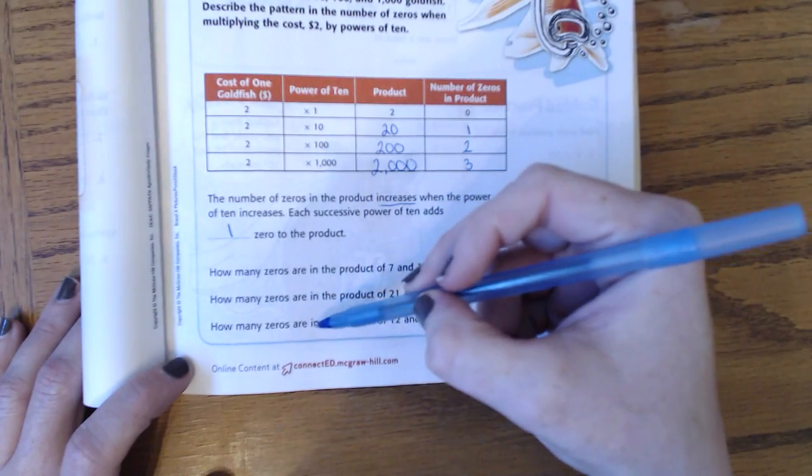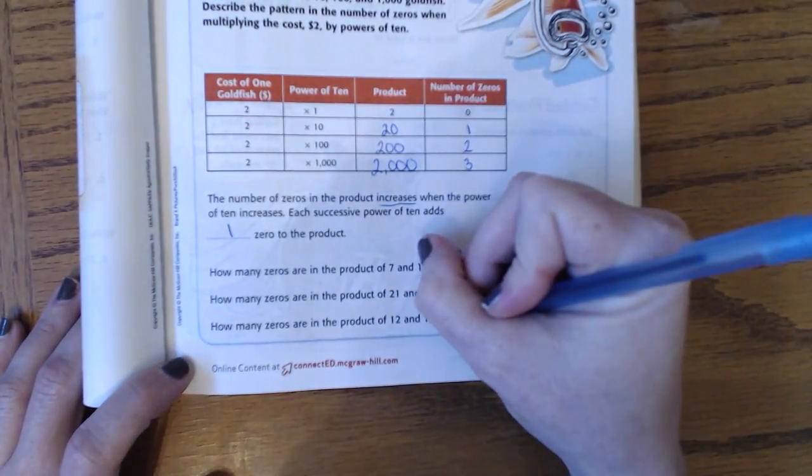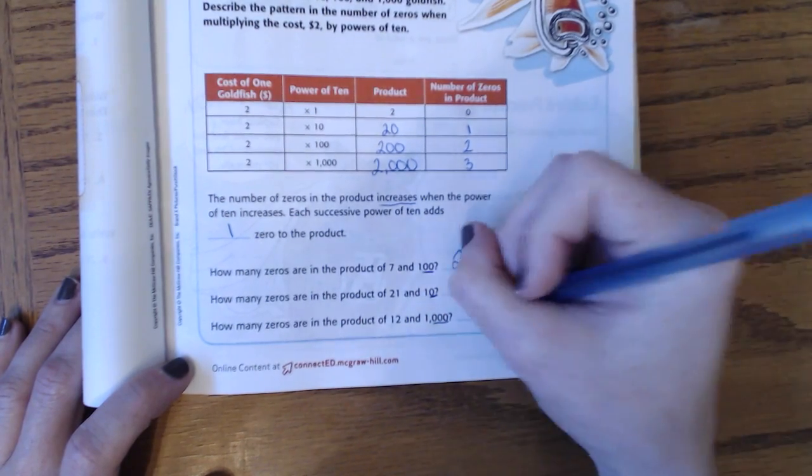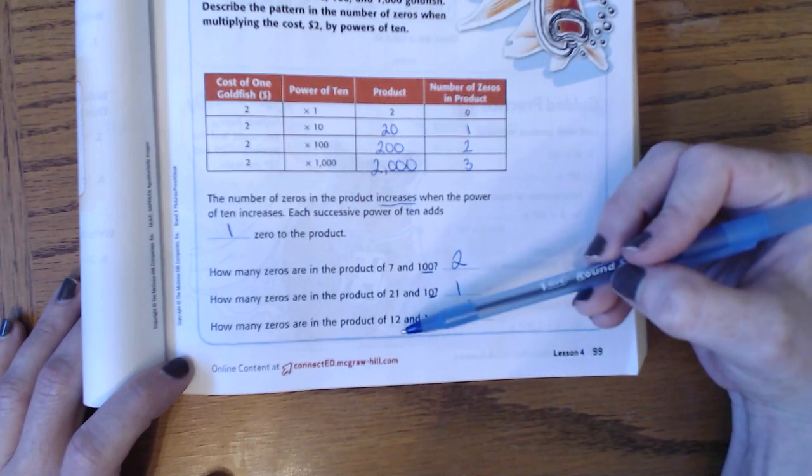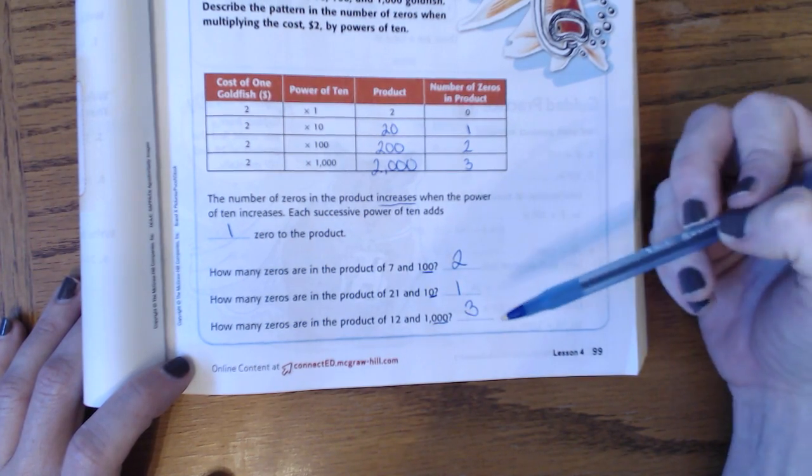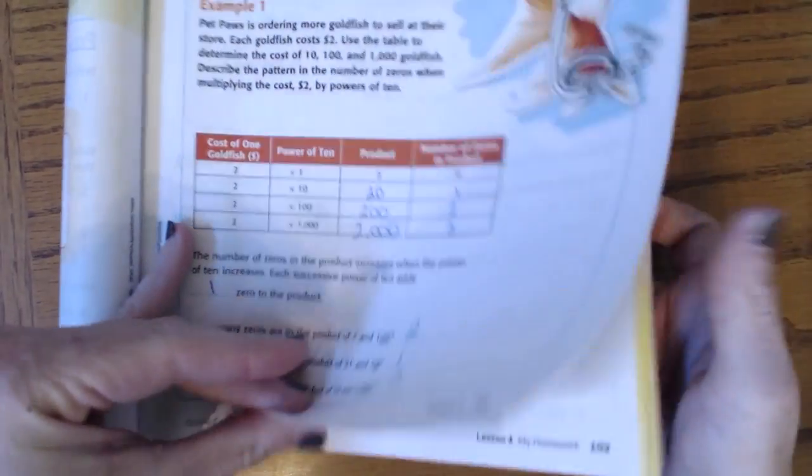And then how many zeros are in the product of 12 and 1,000? Well, how many zeros does 1,000 have? 3. It does not matter what the first number is. You just have to count the zeros, okay? So let's get more examples on the back.